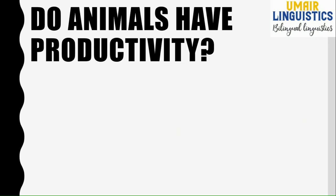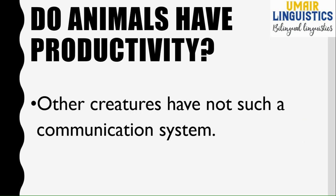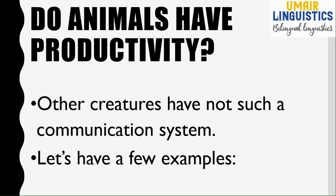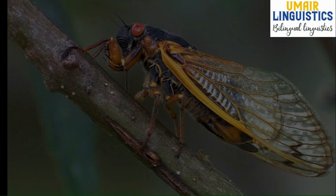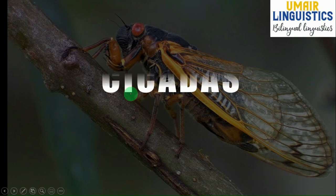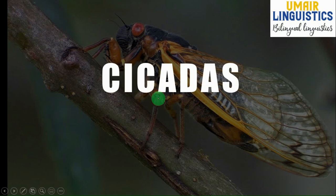Now we look at whether animals also have productivity in their communication. All other creatures do not have a communication system like human beings — they do not have productivity. To prove this, we will discuss a few examples and experiments. The first is the cicada, a flying insect very common in hot areas. In British English it is 'cicada' and in American English it is also 'cicada' according to the Oxford Advanced Learner's Dictionary, 9th edition, 2015.